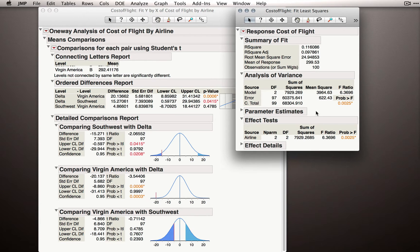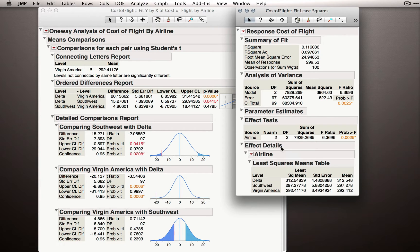From the Fit Model output, we can produce our each pair student's t-test by going under the Effect Details section. Effect Details shows the details for the effects we have in our model. In this case, we only have a single factor, the factor of airline, and we're given the Least Squares Means Table, really the table of means for our different groups.